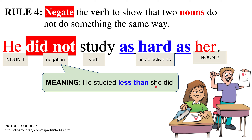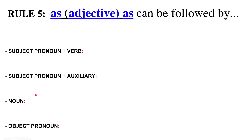To show that two nouns do not do something the same way, I have to negate the verb. Negating the verb means using 'do not,' 'did not,' 'do not study,' 'did not study,' or 'has not studied.'